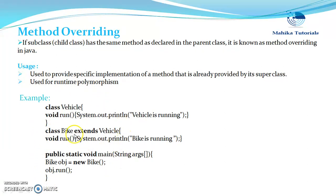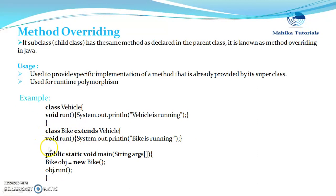Here we have an example of method overriding. We have a class Vehicle which has a run method whose return type is void, takes no parameters. Similarly we create a class Bike that extends Vehicle, and if we give a method with the same signature — void return type, run as name, no parameters — this is termed as method overriding. In the main method we create an instance of Bike and call the run method, which invokes run from the Bike class.